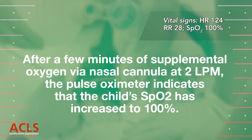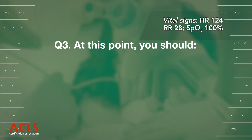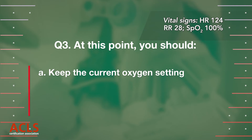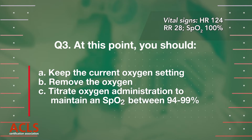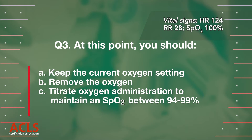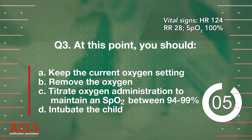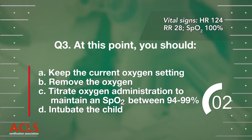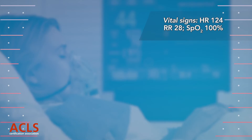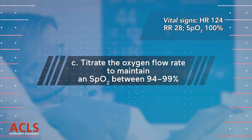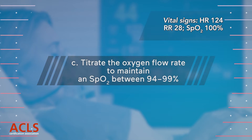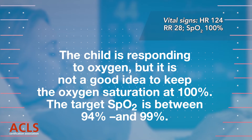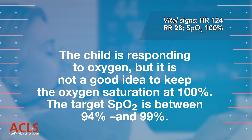Question 3: At this point you should: A) Keep the current oxygen setting; B) Remove the oxygen; C) Titrate oxygen administration to maintain an SpO2 between 94 and 99%; D) Intubate the child. Correct answer C — Titrate oxygen administration to maintain an SpO2 between 94 and 99%. The child is responding to oxygen, but it is not a good idea to keep the oxygen saturation at 100%.